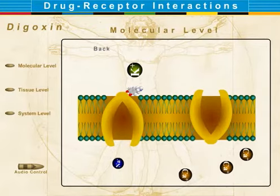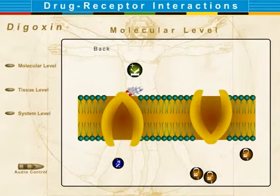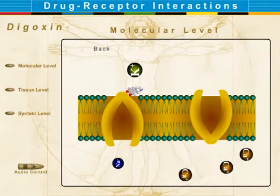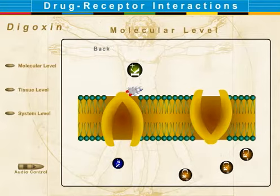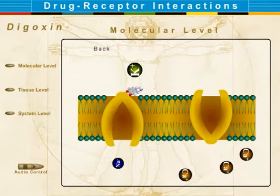The increase in intracellular calcium enhances myocardial contraction. This causes more force to be generated without increased oxygen consumption. Digoxin also slows the heart rate, which allows more filling of the heart and improves cardiac output, hence its use in treating congestive heart failure.